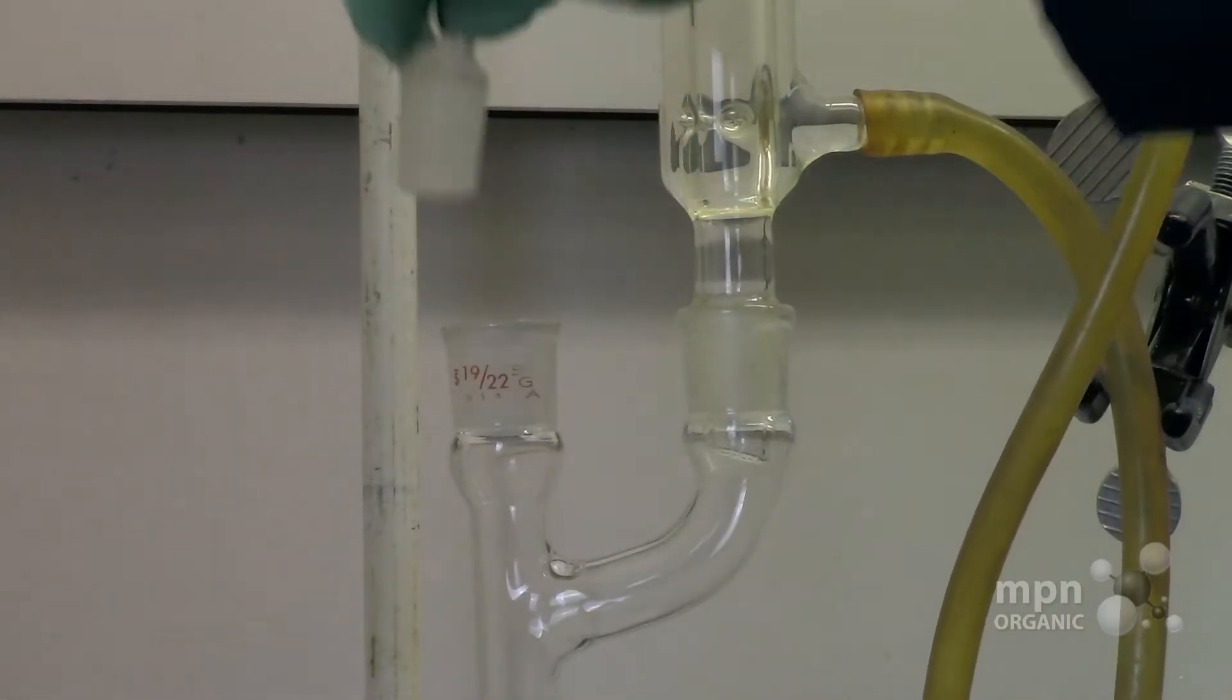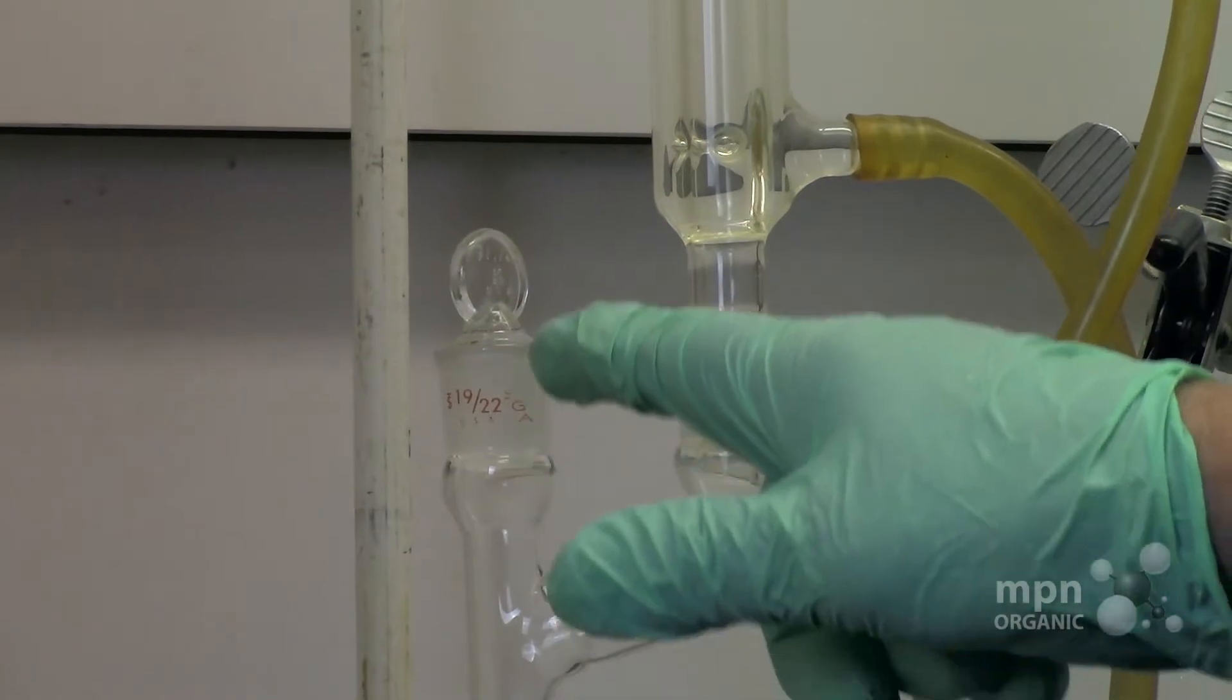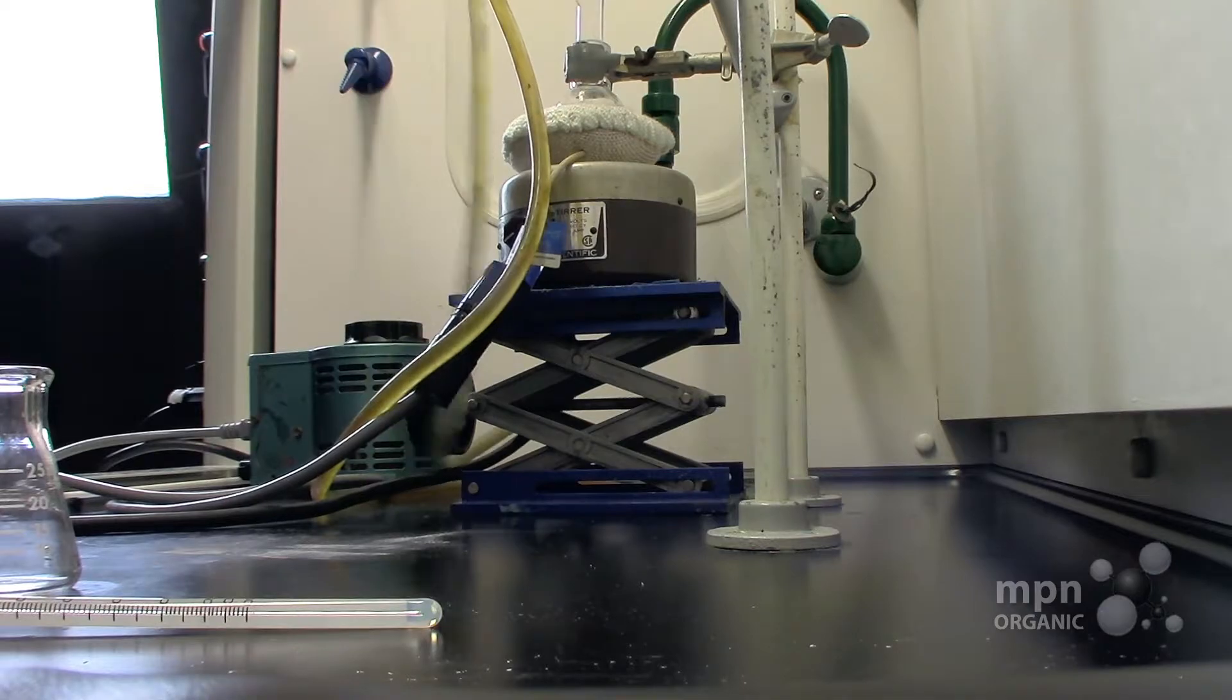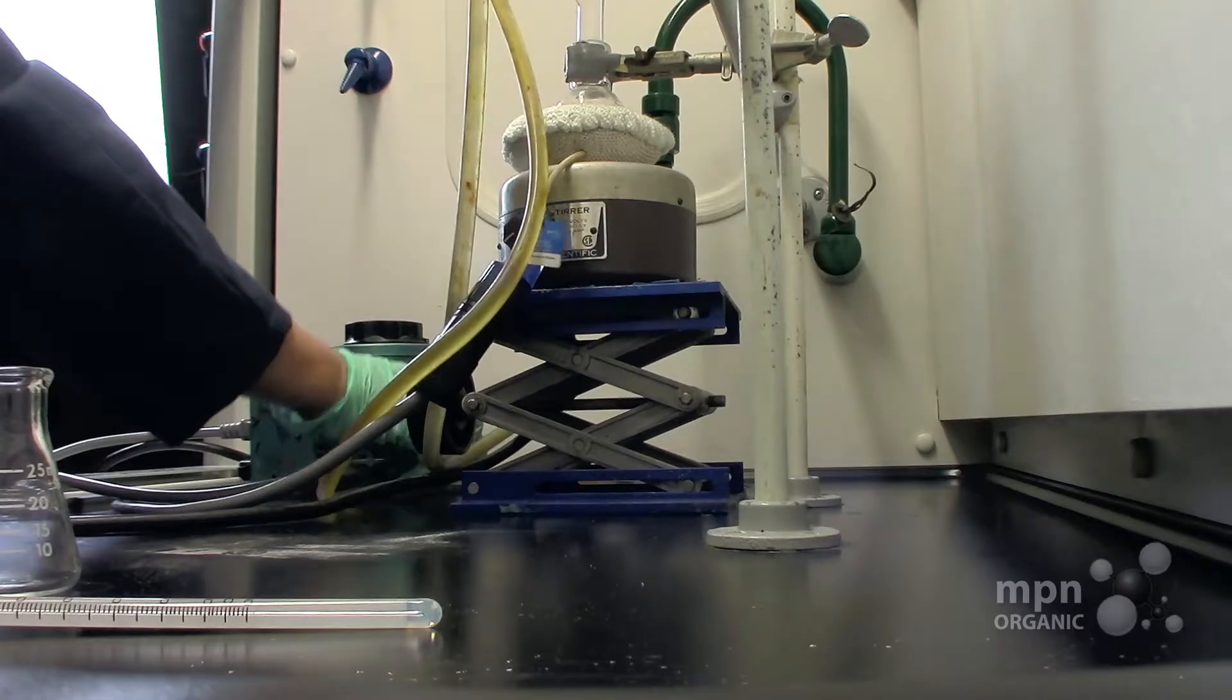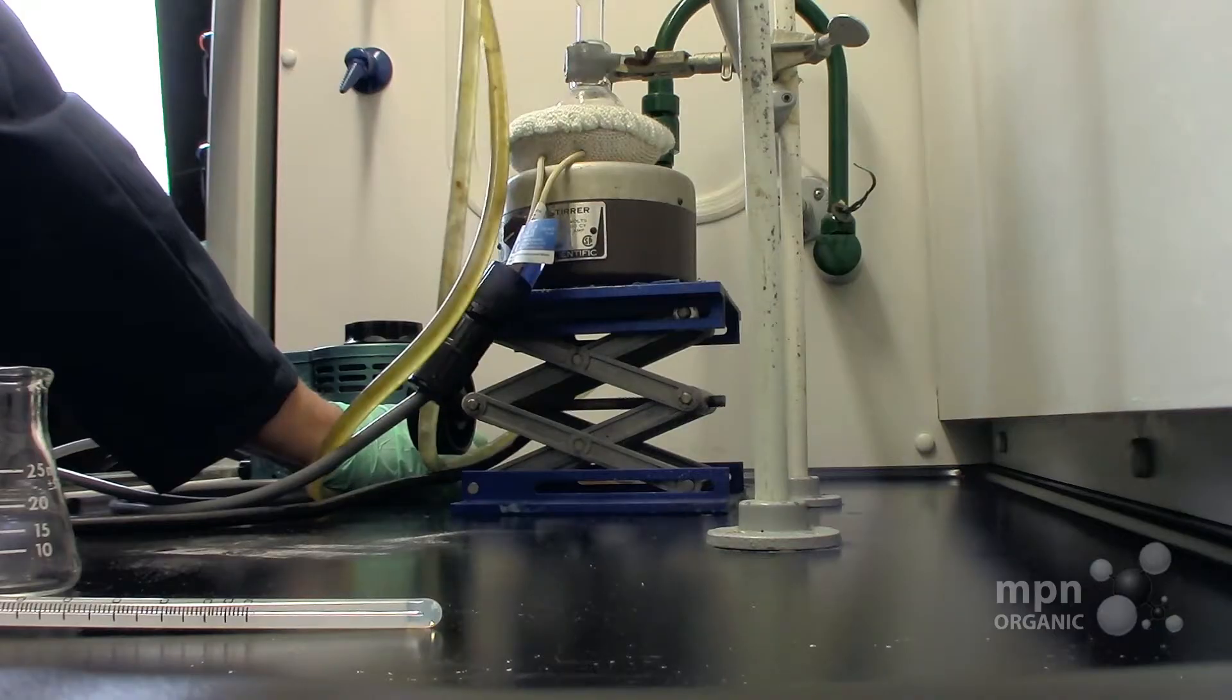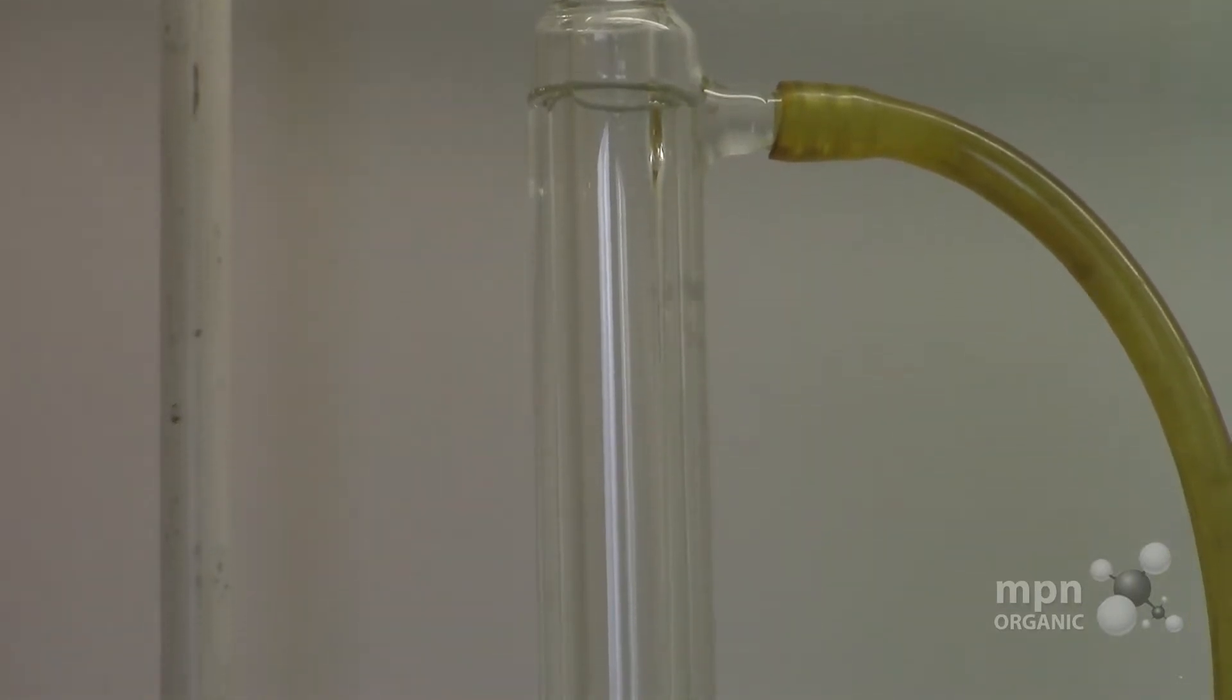Now notice that I have this thing stoppered here so that anything that volatilizes up here doesn't go out this way. The water is still entering in at the bottom and exiting from the top. Let's start that here. Doesn't have to go fast. Okay, it's going pretty steady now.